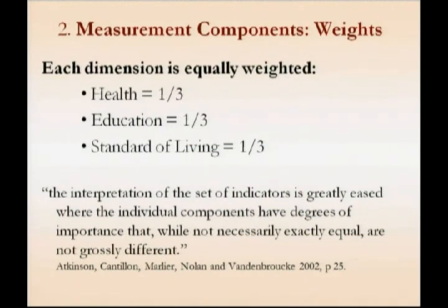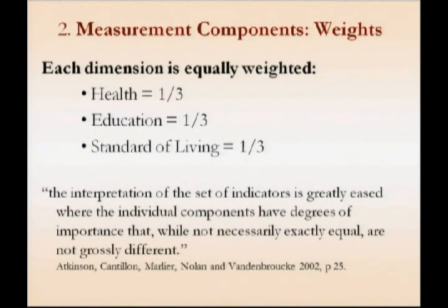In terms of weights, we've weighted each dimension equally. This follows, in a sense, the HDI and the HPI tradition. The weights were very much debated in the 1990s when those indicators were released. Chaudhry and Squire did a paper looking at expert weights. Foster, McGillivray, and Seth have done robustness tests on the HDI and found that varying the weights between a half to a quarter on any one indicator results in 92% of country rankings being robust. There is now a secondary literature on weights which we are trying to buy into to justify equal weighting among the three dimensions.